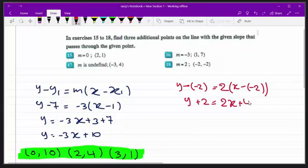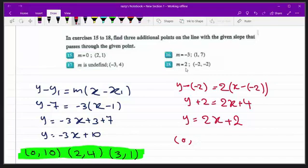Send this 2 to the other side. y is equal to 2x plus 4 will be minus 2, so only plus 2 remains. So this is the equation. If we put 0 in place of x, we will get 2 times 0, 0 plus 2 is 2.